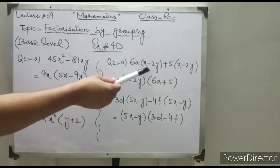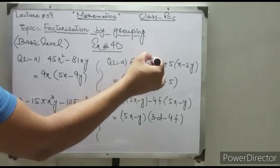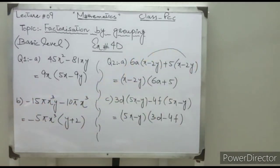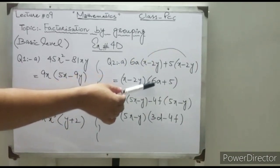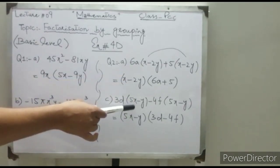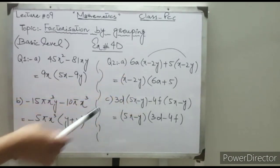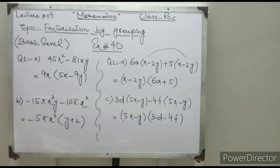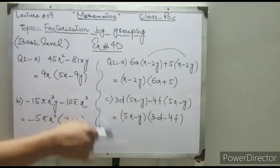In question number 2, we have two common factors in the expression: (x minus 2y). Take x minus 2y common — the remaining is 6a plus 5. In part C, the common factor is 5x minus y, and the remaining is 3d minus 4f.